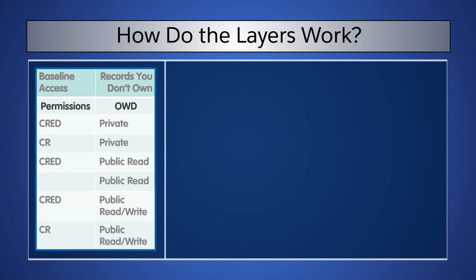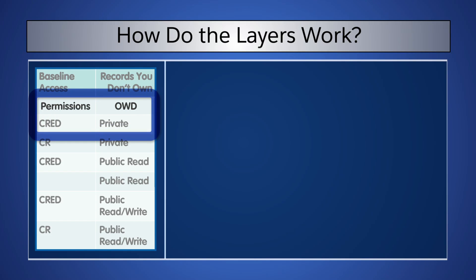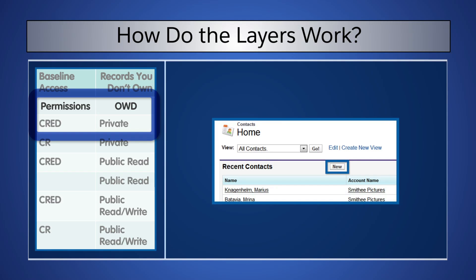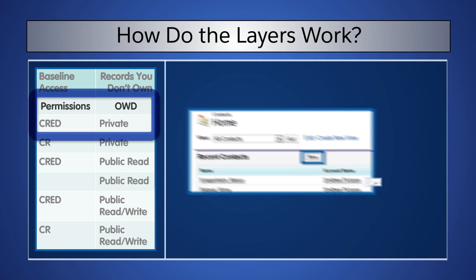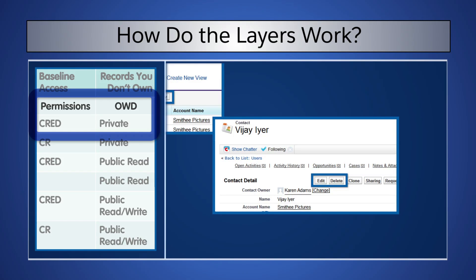Let's use the contact object as an example and see these settings in action with our inside sales rep, Karen Adams. If the permissions are Create, Read, Edit, Delete, and the org-wide default is set to private, Karen can create new records. She can only see contacts that she owns, and on those records, she has Edit and Delete permissions.